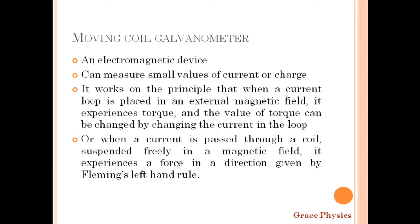The moving coil galvanometer is an electromagnetic device. It is used for the measurement of small current or small charge. There are many applications, including current measurement and the measurement of small values of current.